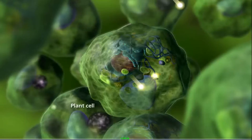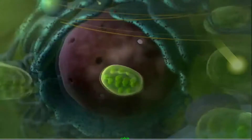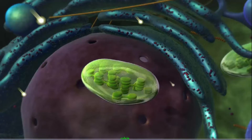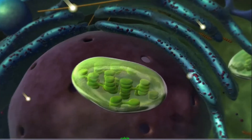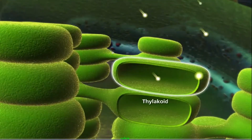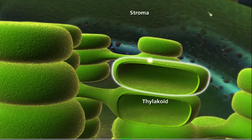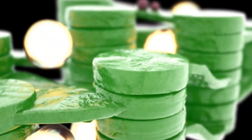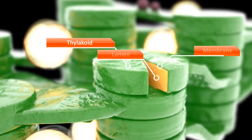In higher plants, the stroma contains several small cylindrical structures called grana. Each granum is composed of 10 to 50 disk-like membranous structures called thylakoids. Each granum is filled with chlorophyll, which is the main photosynthetic pigment. The space inside a thylakoid is called the lumen, while the space outside the thylakoid but within the chloroplast envelope is the stroma, which contains the enzymes responsible for glucose synthesis.